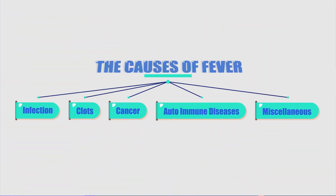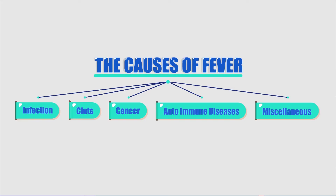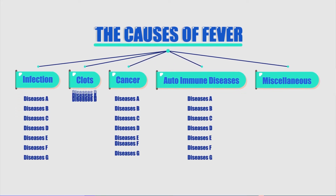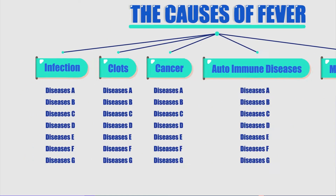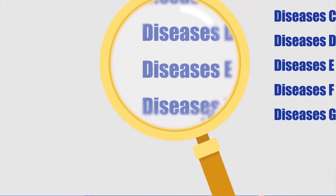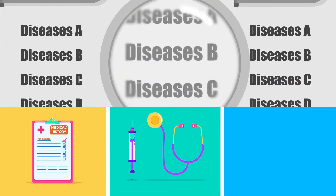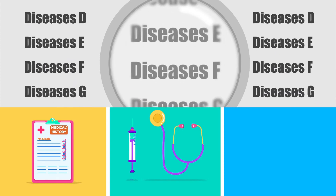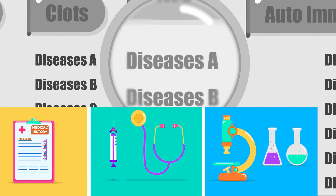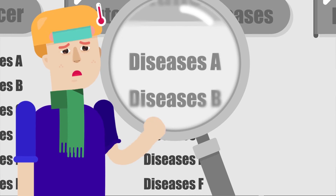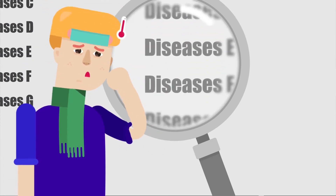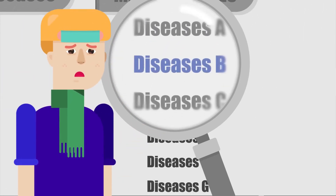To diagnose the cause of fever, we have five broad categories each consisting of a multitude of possible diseases. In order to narrow down the diagnosis, we need to perform a thorough history and examination and request appropriate lab investigations where relevant. Fever is usually accompanied by other symptoms which may guide the diagnosis of the underlying disease.